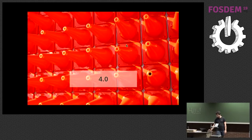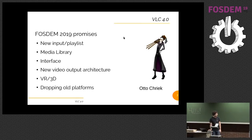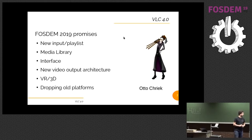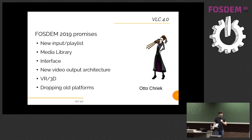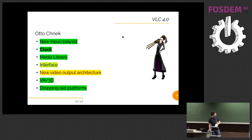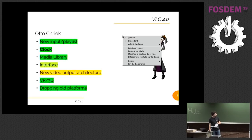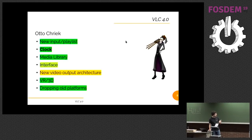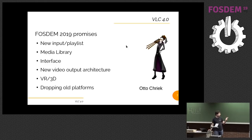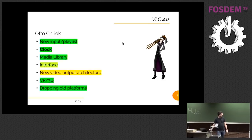The core of the talk is about VLC 4.0. This is exactly the slide I had last year — if you want to troll me, you can go and check on the website from last year. The next release is called Otto Schriek, which is a vampire from Discworld. I said: new playlist, media library, work on the interface, new video output architecture, VR 3D, and dropping platforms. And basically, we've done almost everything.